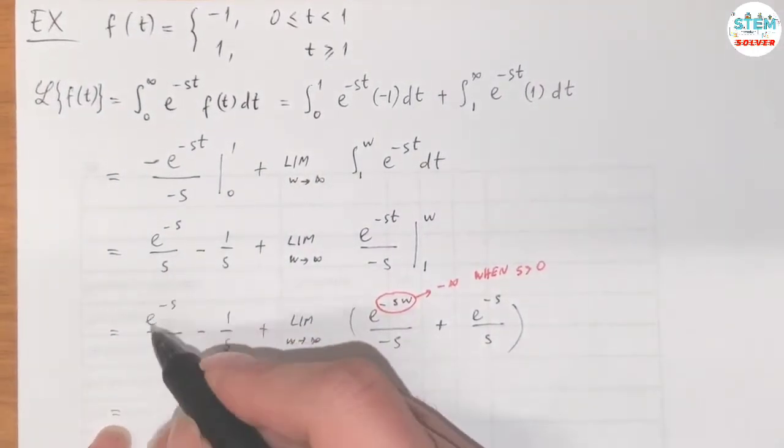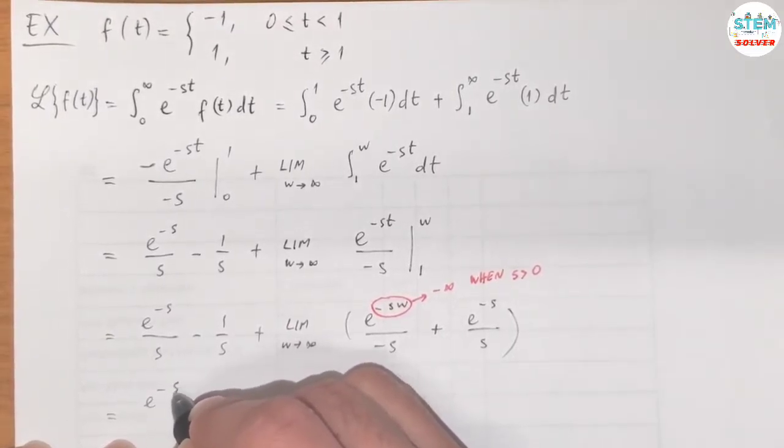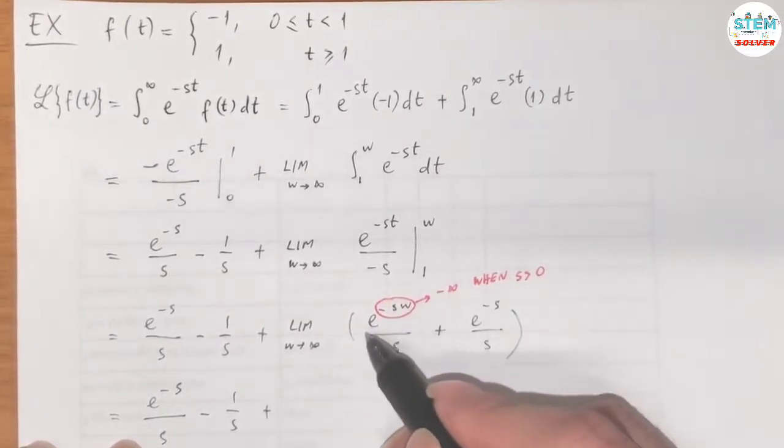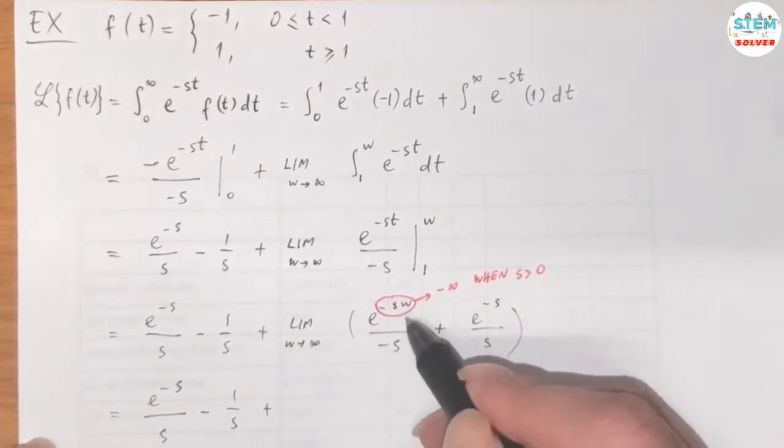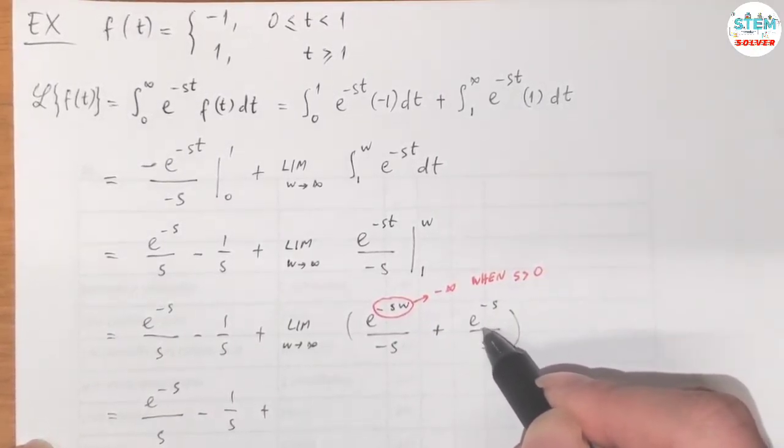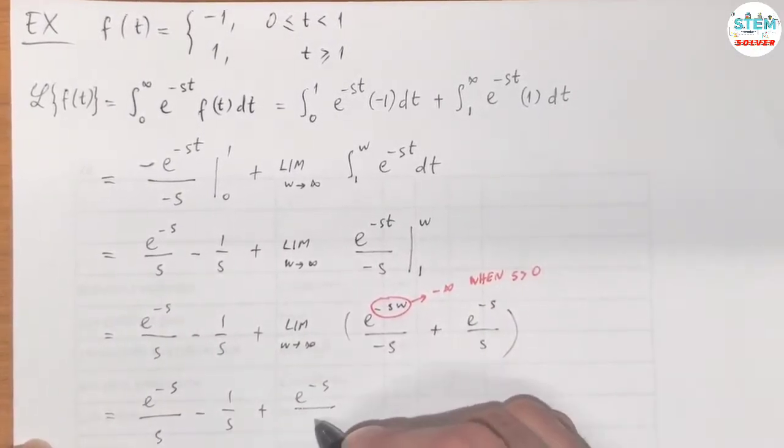Then our final answer is e to the negative s over s minus 1 over s plus. As this goes when s greater than 0, this will go to 0. And we have e to the negative s over s.